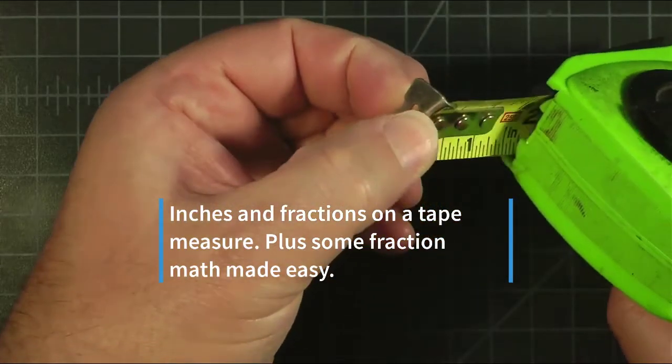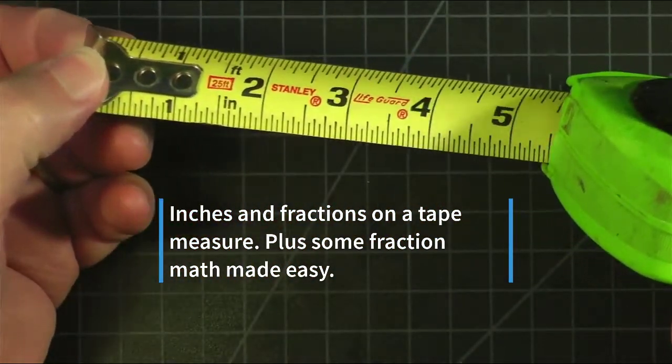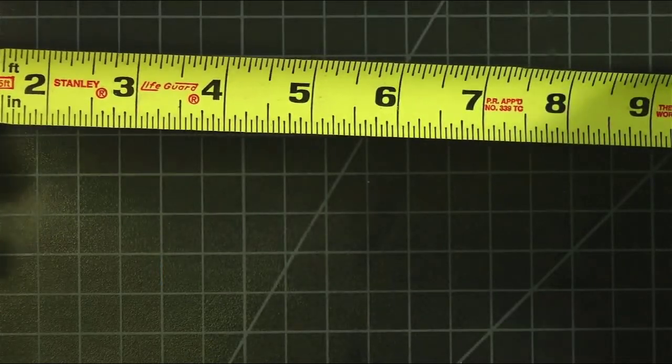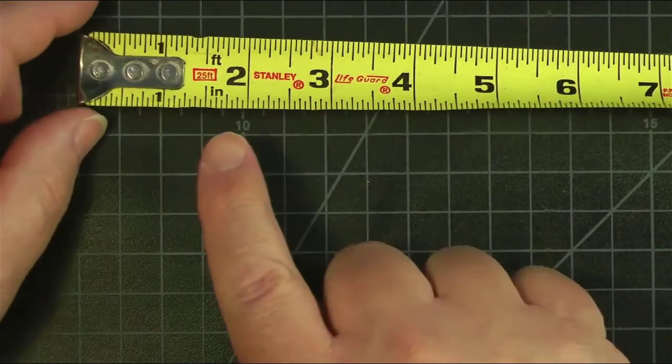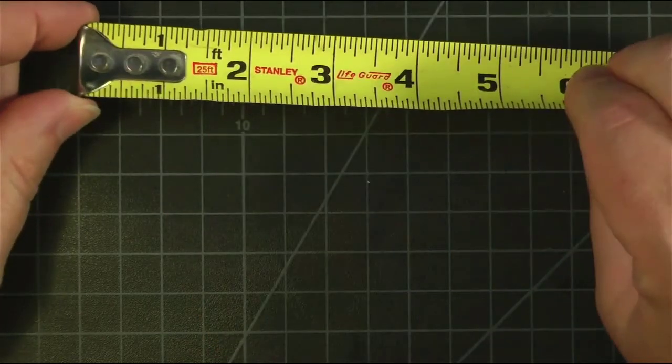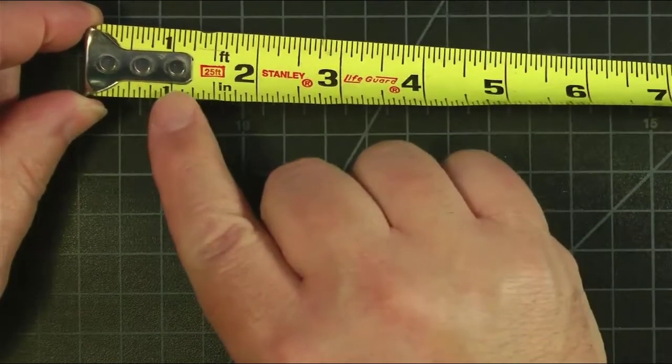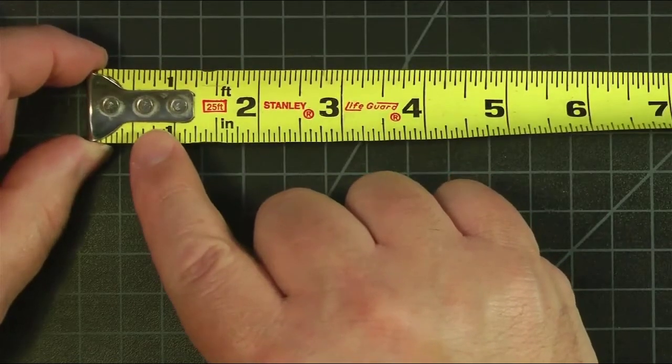Here we have a standard tape measure. This is a 25-foot tape measure. In the tape measure we have inches and we have a loose hook. If you stay until the end, I'm going to tell you why it's loose and how to fix it.